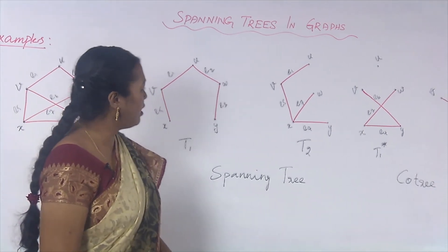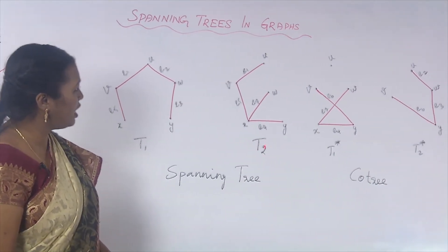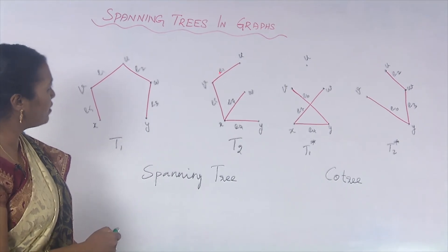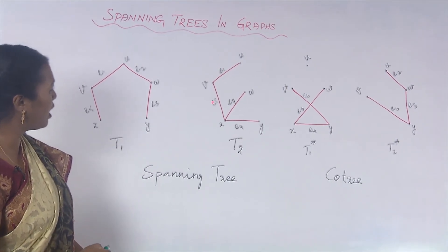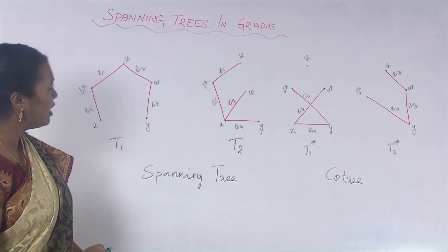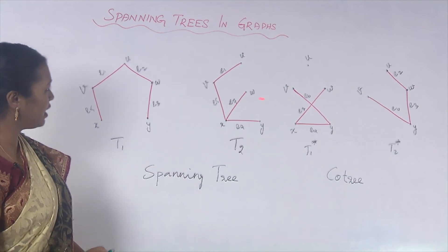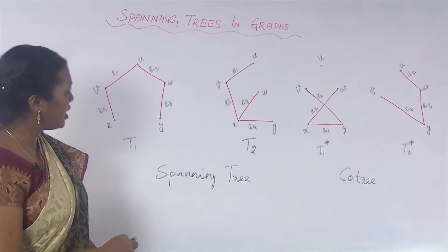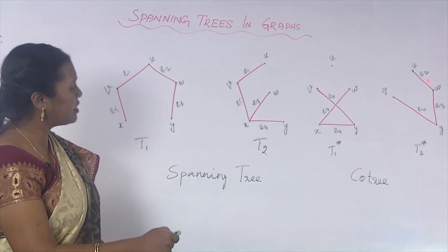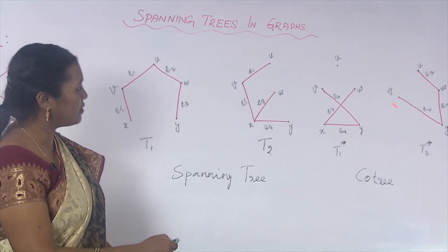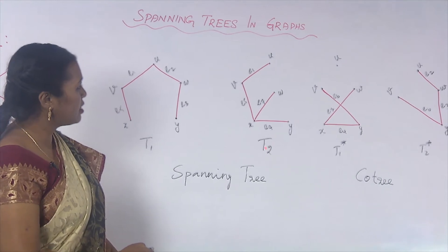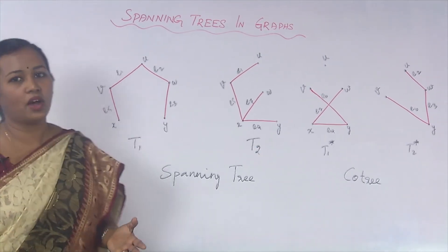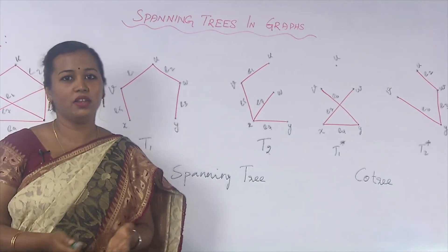Therefore, T1* is a core tree of T1. Similarly, T2* is the core tree of T2. Here we do not have edge E1, edge E5, E7, and E4. The edges that do not exist in T2 exist in T2*. So T2* is the core tree of T2. This is how we understand core trees.